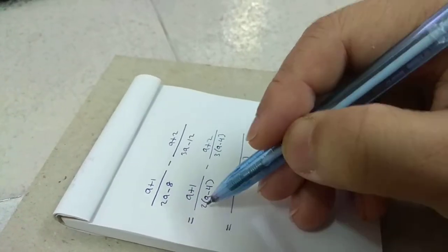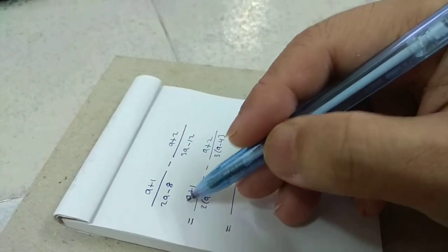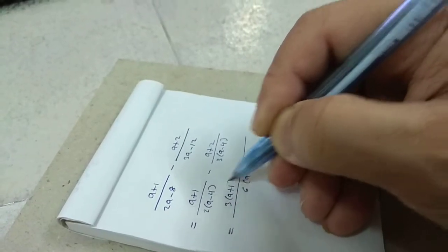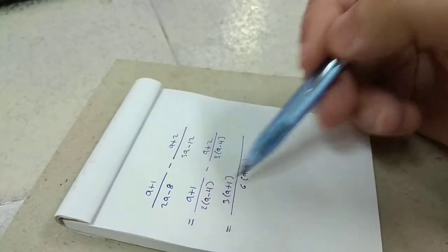You change this. You multiply by 3 above, 3 below. So this is equal to this.